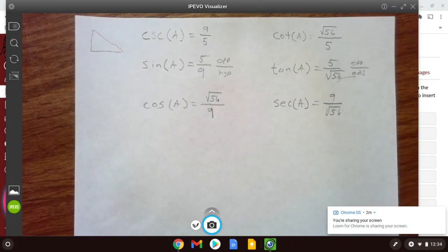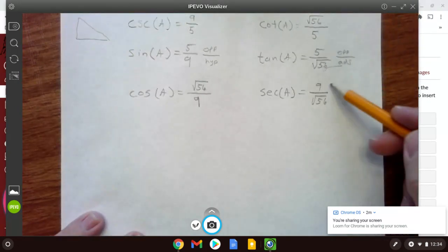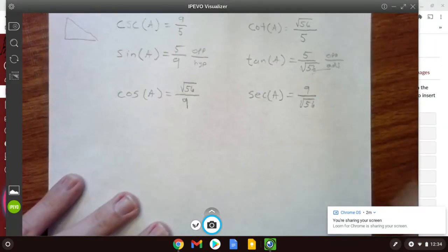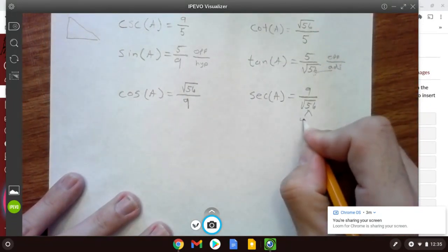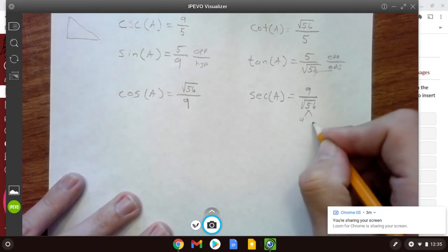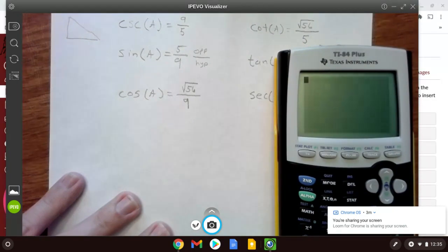And that's really all you need to do with this one. So you can stop the video here if you want to. Just as an exercise, I'm going to go ahead and simplify this 9 over root 56. So 56, that is the same as 4 and 14. Let me make sure here. Yeah, 56 divided by 4. Yeah, 14.